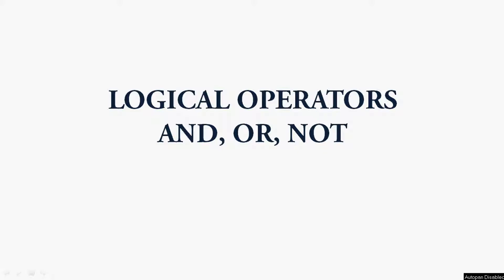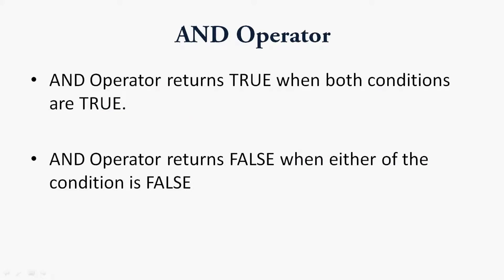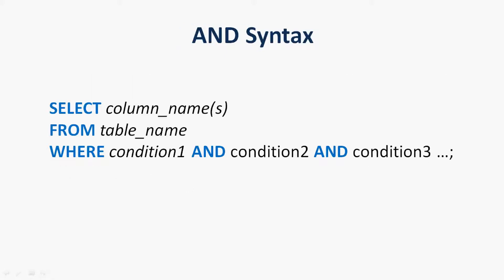Hi friends, welcome to Oracle tutorials. In this video we are going to see the logical operators AND, OR, and NOT. The AND operator returns true whenever both conditions are true and returns false whenever any one of the conditions is false. The syntax is: SELECT column names FROM table name WHERE condition one AND condition two AND condition three.